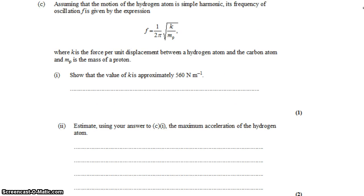We want to show that the value of k is approximately 560 newtons per meter, so we need to solve this equation for k. We'll do that by multiplying across by 2 pi, and we'll get 2 pi f. At the same time, we'll square both sides, and then multiply across by the mass of a proton, and that gives us k.